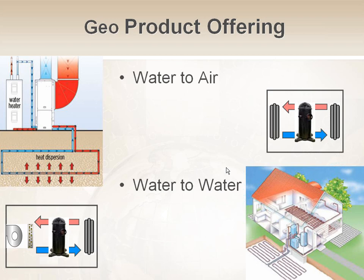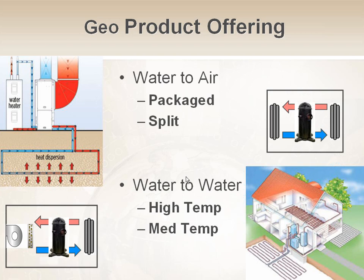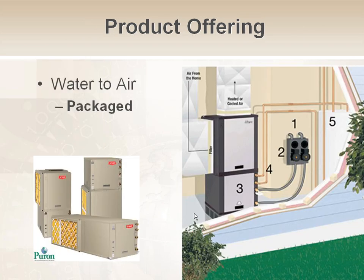That's the difference between water-to-air and water-to-water, and you'll see both classifications of units. On any given installation, you may have both — most commonly you do. Under the water-to-air classification, there are two types: packaged units and split units. Water-to-water units also offer two different types: high-temperature and medium-temperature units, each with different applications.